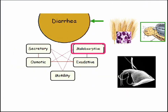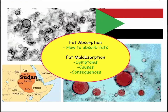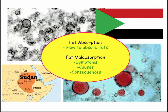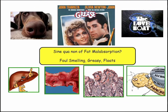Let's do the malabsorptive ones — these are the players. We're going to finish up how to absorb fats — chylomicrons — and look at the syndromes. Sudan black and Sudan red stains detect fat in the stool, and that means something important diagnostically.